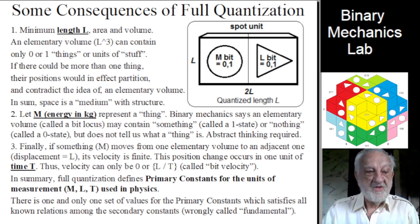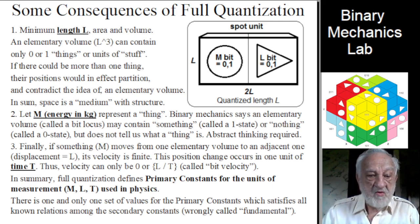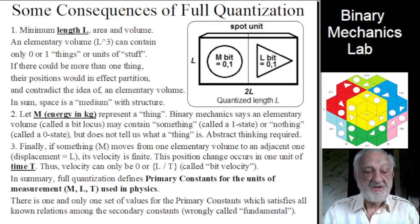Finally, the third thing. If something M moves from one elementary volume to an adjacent one where the displacement equals L, its velocity is finite. This position change occurs in one unit of time. Thus, velocity can only be zero or L divided by T, called bit velocity.